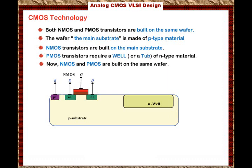We do the same thing for the PMOS. We diffuse the heavily doped P-type material to represent the source and the drain, then add the silicon dioxide and poly to represent the gate. For the bulk, we use heavily doped N-type material connected to the body, and the body of the PMOS transistor is connected to the highest voltage in the circuit.